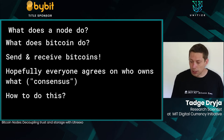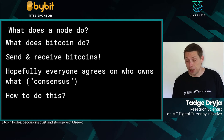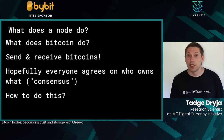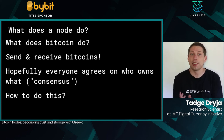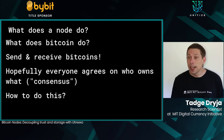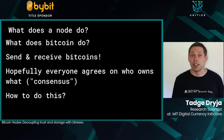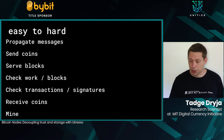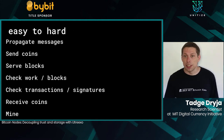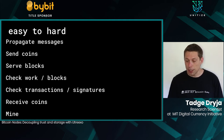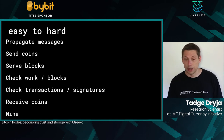What does a node do? Mainly, it sends and receives transactions. The hope is that everyone agrees on who owns what — you send transactions to move coins around. Specifically, nodes propagate messages, send coins, serve blocks, check proof of work, check transactions, receive coins, and mine.